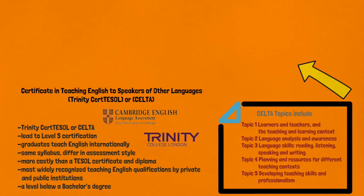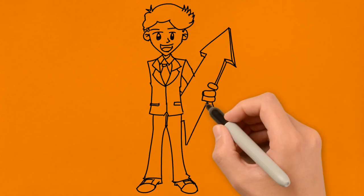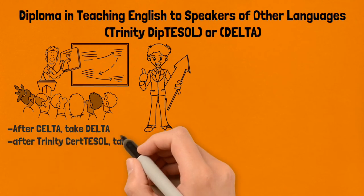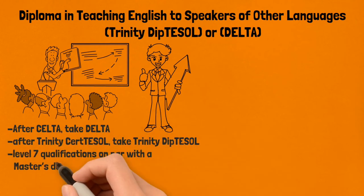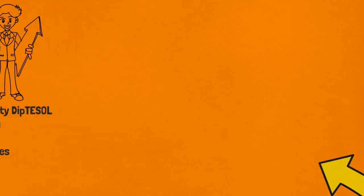After Trinity Cert TESOL, take the Diploma in Teaching English to Speakers of Other Languages, or take the Cambridge Teaching English to Speakers of Other Languages after CELTA. They have four and three modules respectively, taken independently or all at once in any order. They have Level 7 qualifications on par with a master's degree. The training benefits those who want to work in administrative teaching roles, such as trainers, managers, and principals.